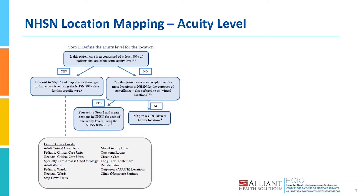For NHSN location mapping, you're going to first go by acuity level. Step one is defining the acuity level for the location in the hospital. The first question is: does this patient care area have at least 80% of patients at the same acuity level? If the answer is yes, then you're going to select which acuity level — adult critical care, pediatric critical care, neonatal critical care, adult ward, or long-term acute care, for example.